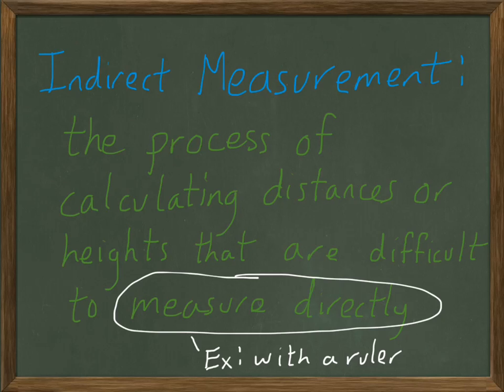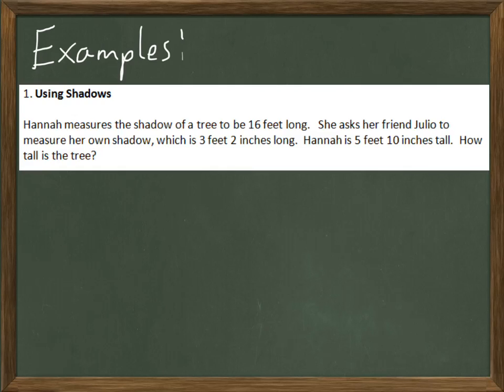The best way to see how some of these techniques work is to see some examples. So let's go for it. Here's the first example. One way you can find the height of things that are really tall, which would be difficult to measure normally, is by using shadows.